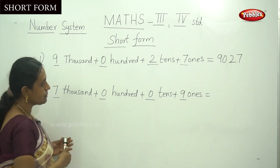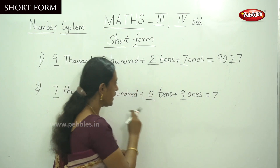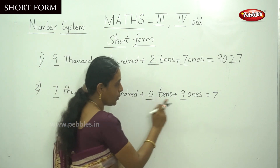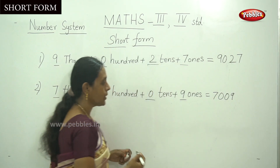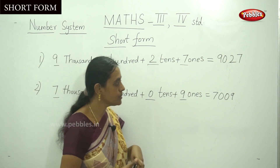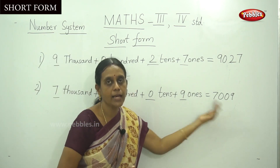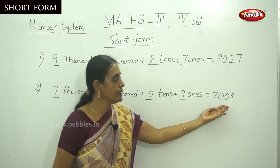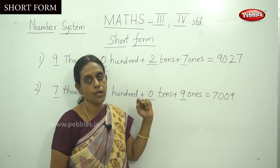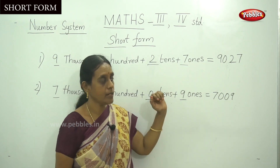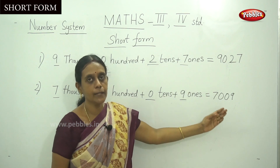So you have to write this zero in your short form answer. Write down this number, that is seven, and zero, zero, nine — one, zero, zero, nine. How to read the number? This is seven thousand and nine. Because hundred and tens place, there is no number at all. Seven thousand and nine. So this is nine thousand twenty seven and seven thousand and nine.